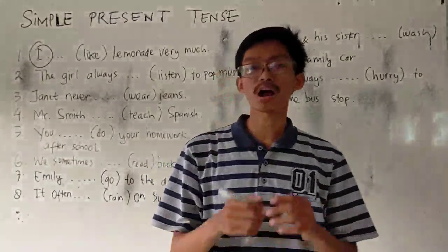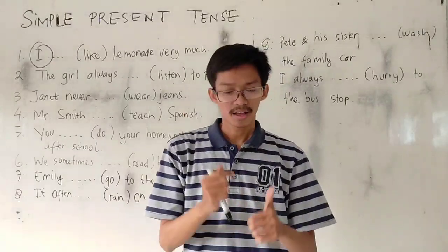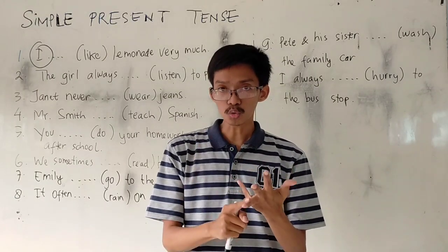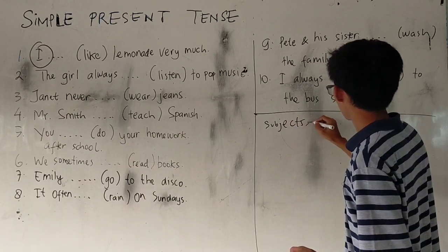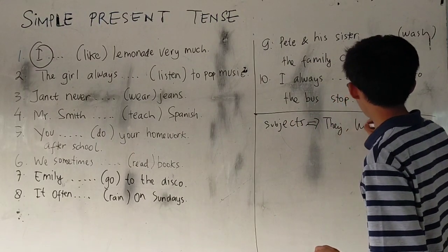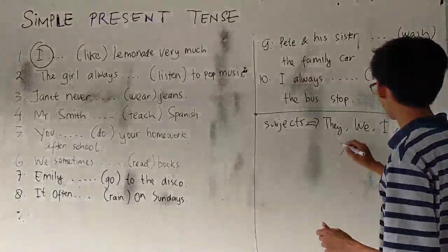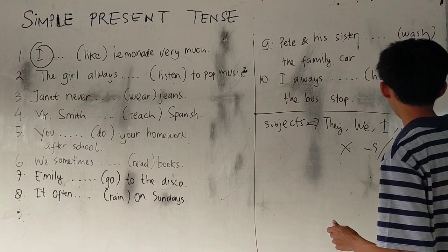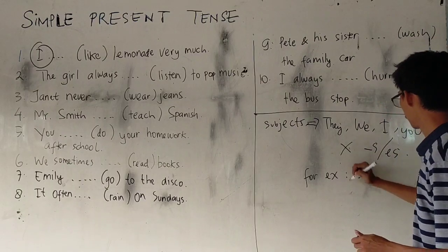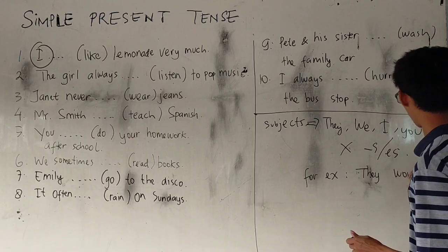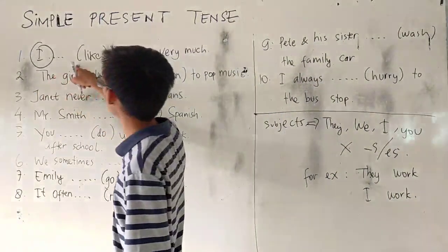Is it 'I like' or 'I likes'? You have to see the subject. If the subjects are they, we, I, or you — you do not add S or ES. No S or ES. For example: they work, I work. So here, you got it right — I like.